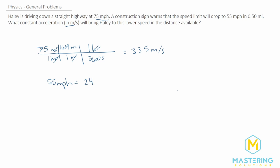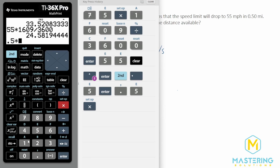Now we have the speeds in standard units, but we also need to convert the distance into standard units. We take 0.5 miles and apply the same conversion: multiply by 1609 meters per mile. So 0.5 times 1609 gives us 804.5 meters.